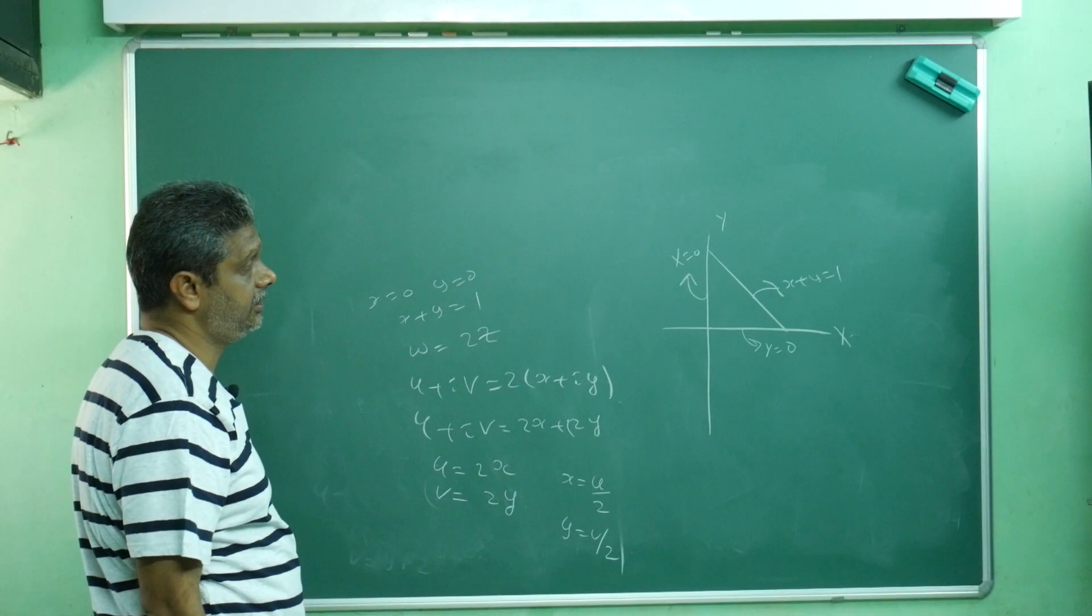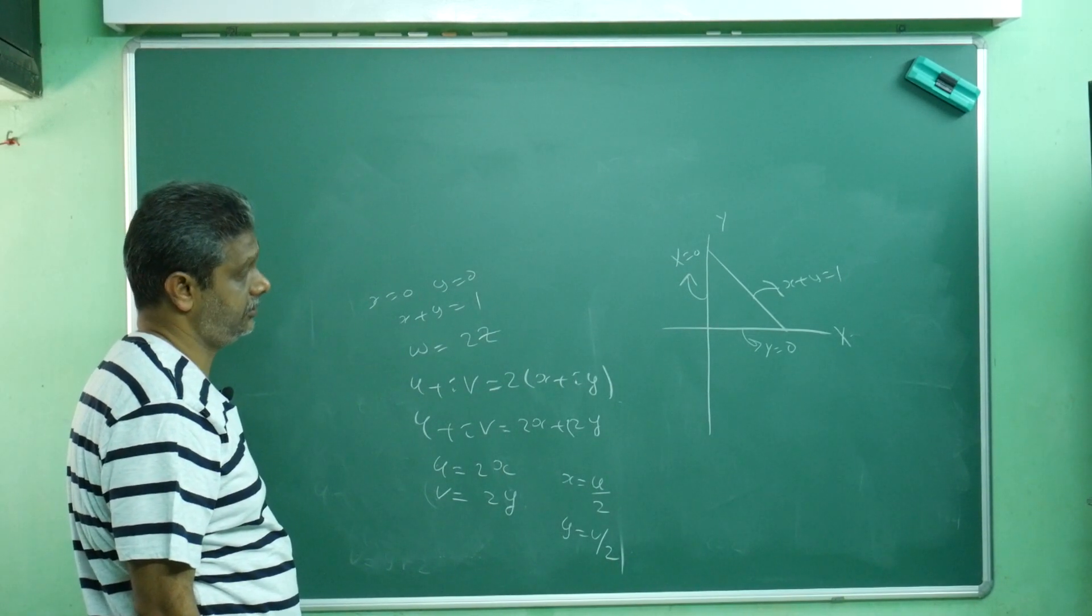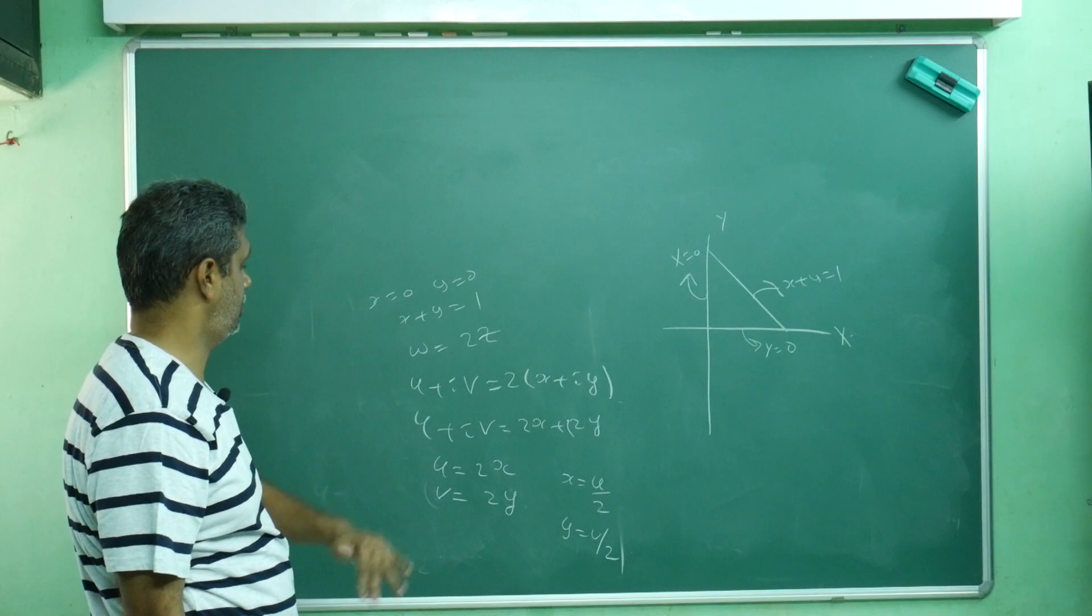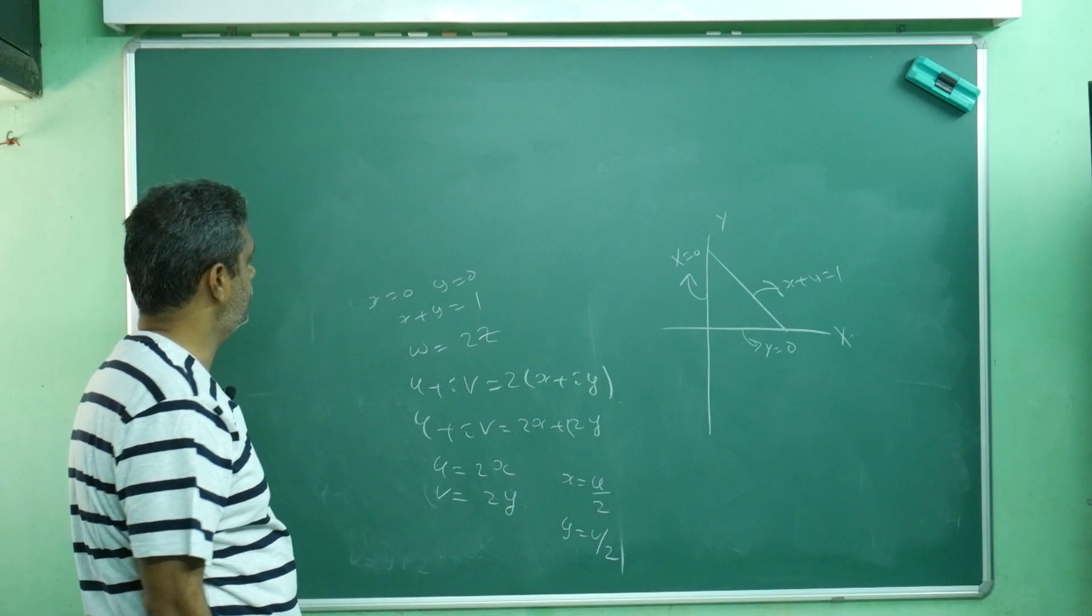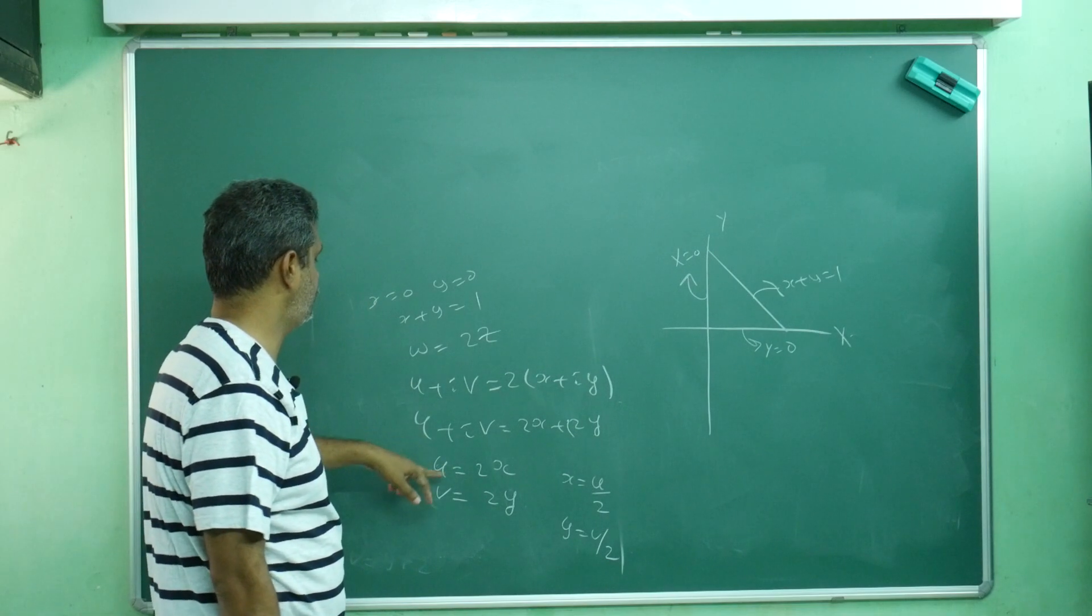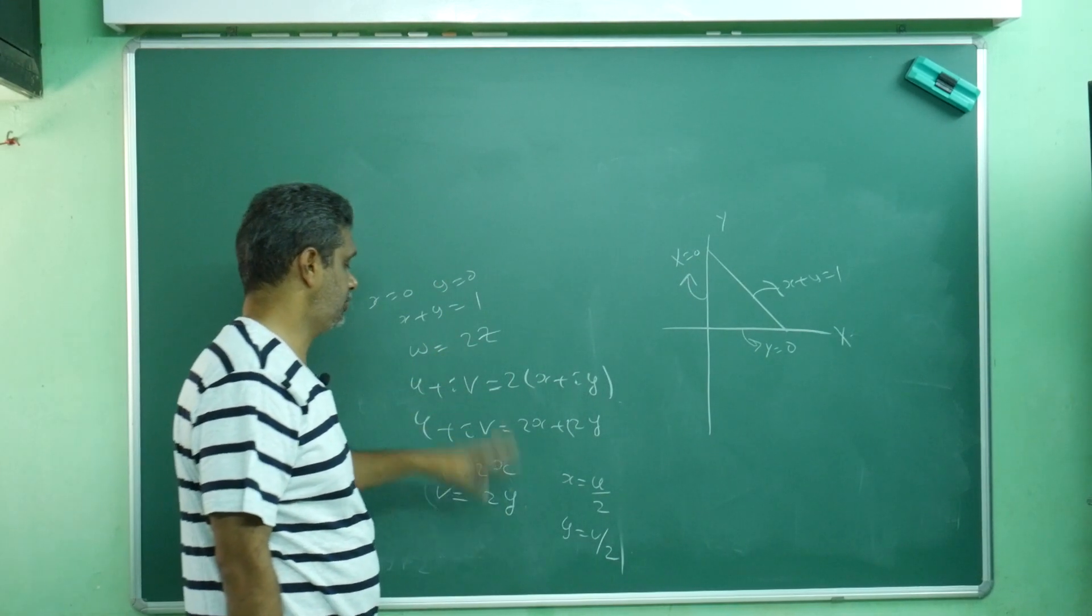In z plane x + y = 1, this triangle maps onto what. Now, x = 0 means u = 0, y = 0 means v = 0.